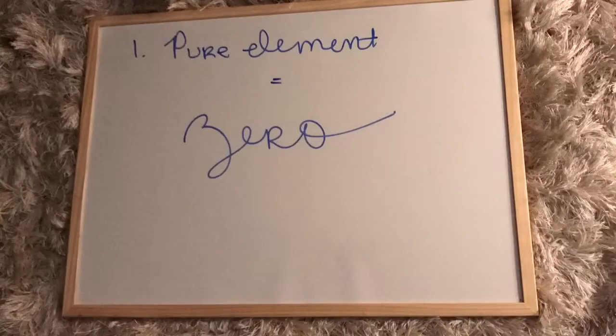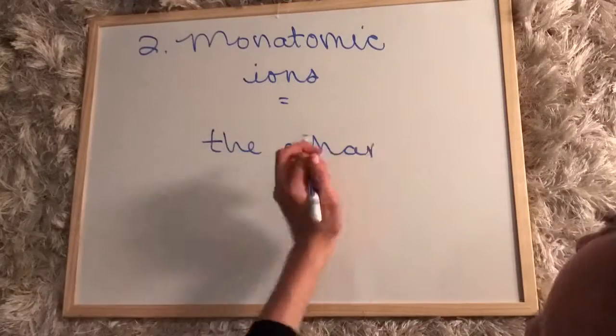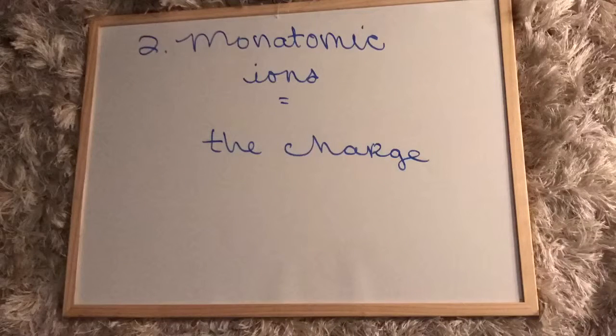Now let's go over the seven rules of oxidation numbers. Rule number one is that all pure elements have an oxidation number equal to zero because none of them have a charge on their own. Which brings us to rule number two, that monatomic ions all have oxidation numbers that are equal to their charge.